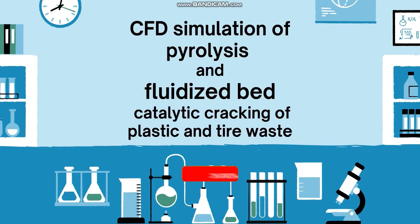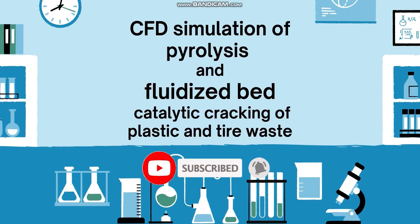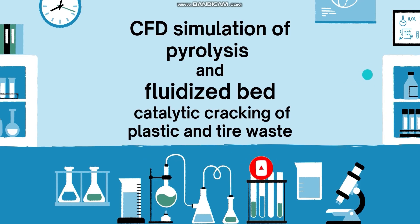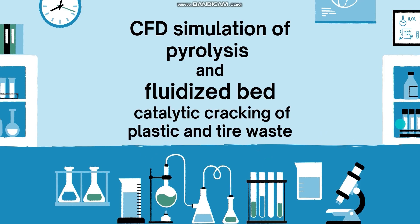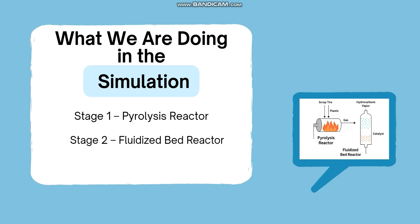Welcome to this tutorial. In this simulation, we are modeling a two-stage thermal and catalytic conversion system to process plastic and tire waste into valuable fuel gases. This is based on the principles of pyrolysis and the fluidized bed catalytic cracking using a zeolite catalyst. The simulation involves two processes: a pyrolysis reactor and a fluidized bed reactor.